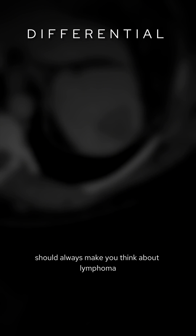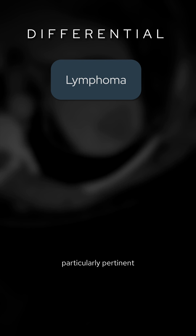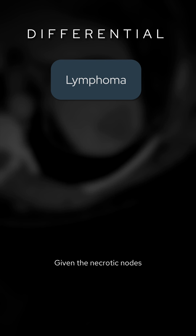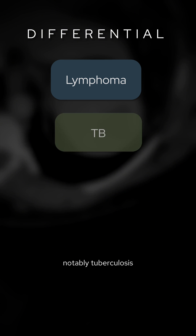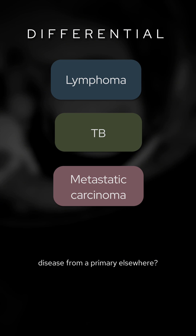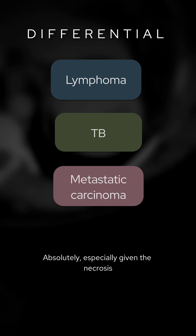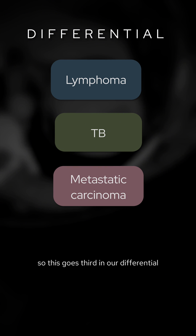So what is the differential in this case? Multiple lymph nodes should always make you think about lymphoma, particularly pertinent given the lesion within the spleen. Given the necrotic nodes, depending on the clinical situation, clinical correlation is advised — we need to consider infection, notably tuberculosis. Could the nodes represent metastatic disease from a primary elsewhere? Absolutely, especially given the necrosis. So this goes third in our differential.